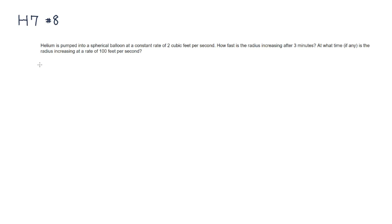The volume formula for a sphere is V = (4/3)πR³. If you take the derivative of V with respect to time T, you get: 4/3π is just a constant, and the derivative of R³ is 3R² dr/dt.